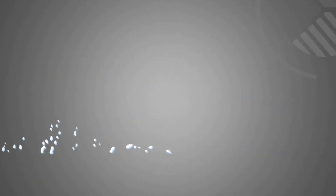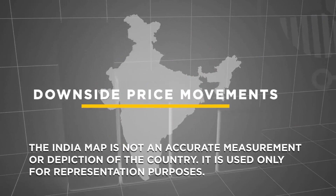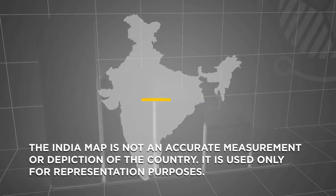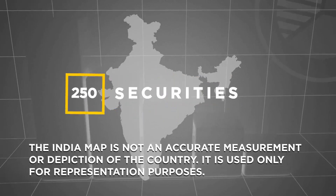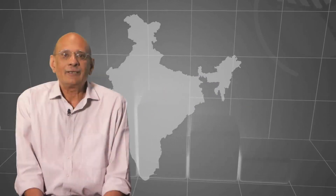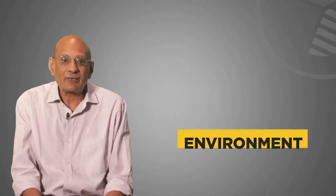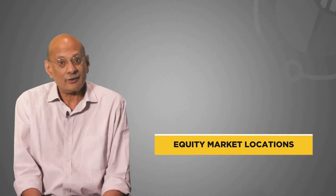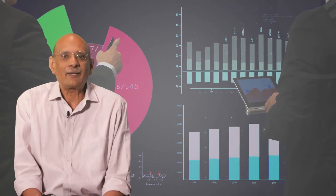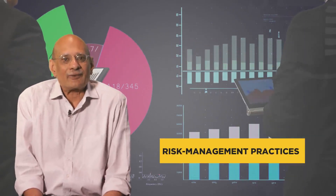In the Indian setting, strategies that profit from downside price movements typically take place in what is known as the FNO segment, or the futures and options segment. There are only about 250 securities in which these reverse bets are permitted, but surely there could be any number of stocks not in the FNO segment on which you might want to place that reverse bet. In India, efforts have taken place at various times to create such an environment, but they have not been very successful thus far. This short selling activity, however, is very common in many other equity market locations.